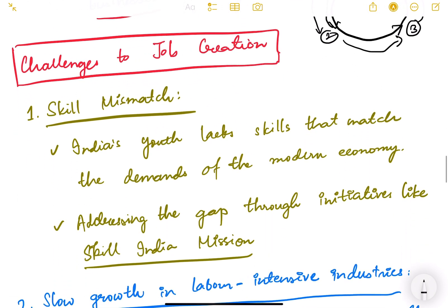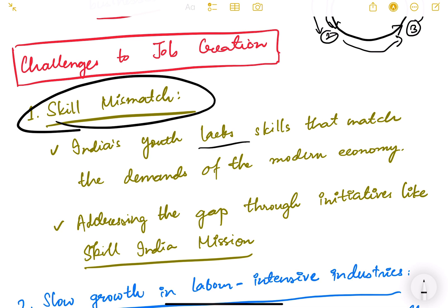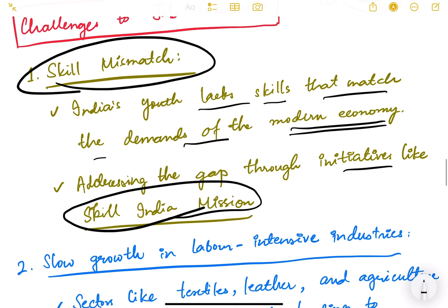Now let us look at the challenges to job creation. The first challenge is skill mismatch — India's youth lack skills that match the demands of the modern economy. We need to train young people with the skills demanded by industry. Addressing these gaps is the aim of initiatives like the Skill India Mission and Pradhan Mantri Kaushal Vikas Yojana, which provide individuals with skills that match the demands of the economy.